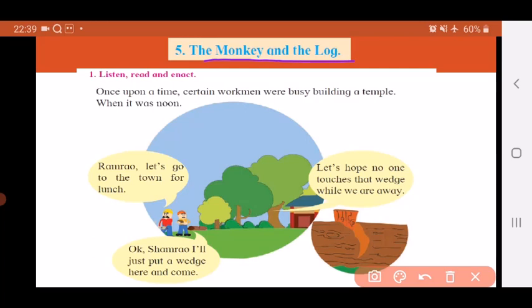You can read along with me children. The Monkey and the Log. Once upon a time, certain workmen were busy building a temple. When it was noon, so here there are some men at work and they are building a temple and then it becomes afternoon.